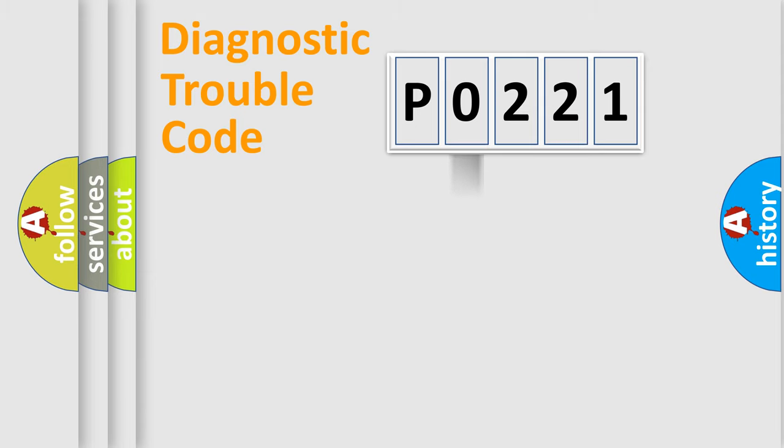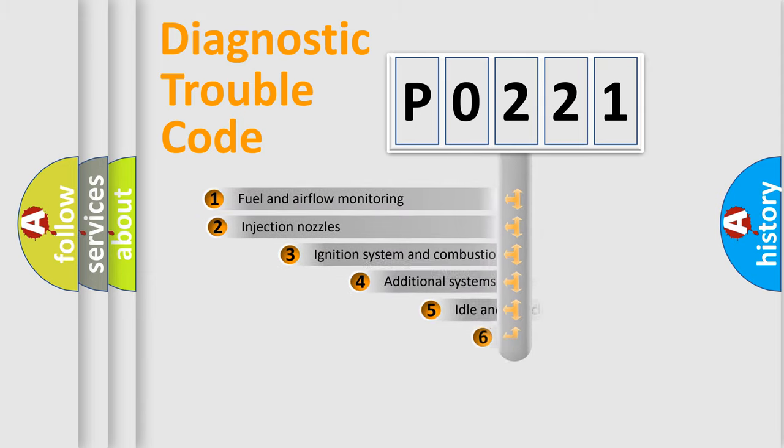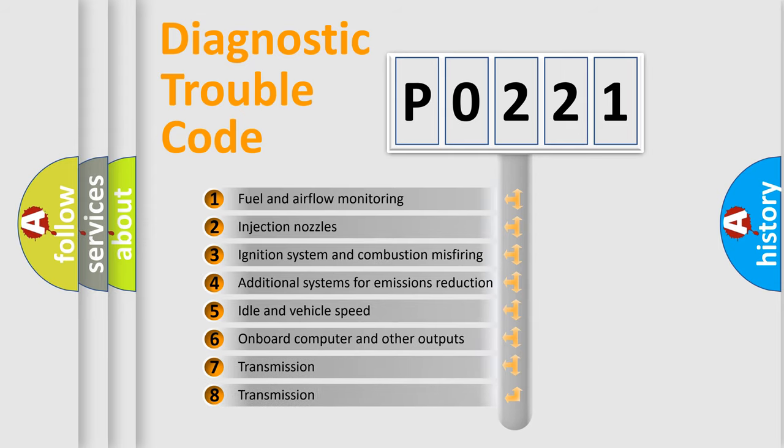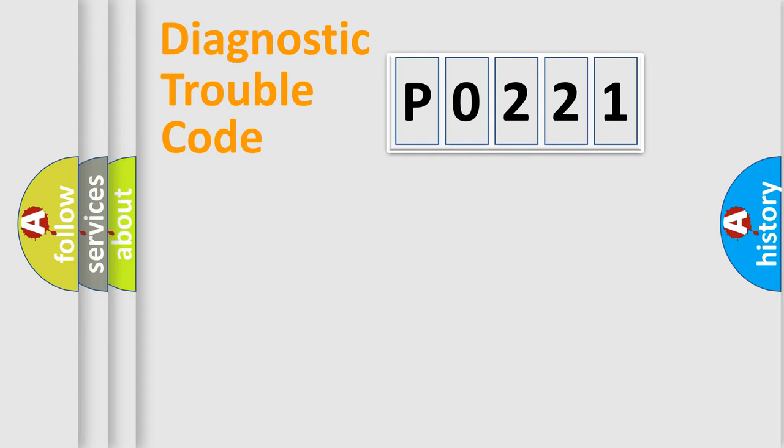The third character specifies a subset of errors. The distribution shown is valid only for the standardized DTC code.